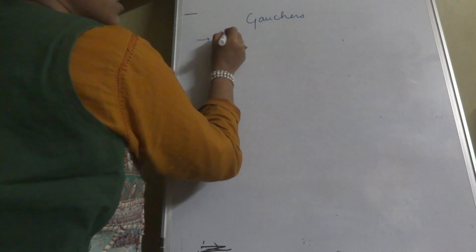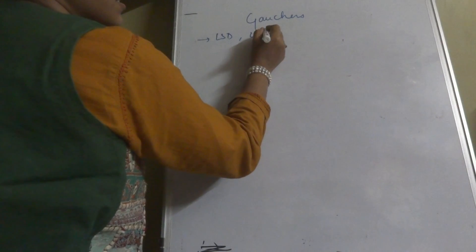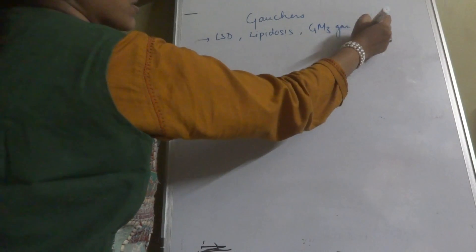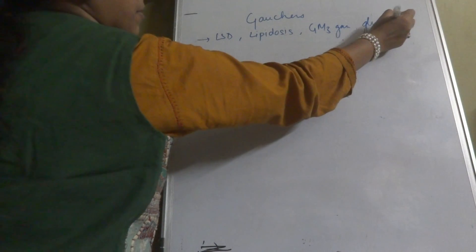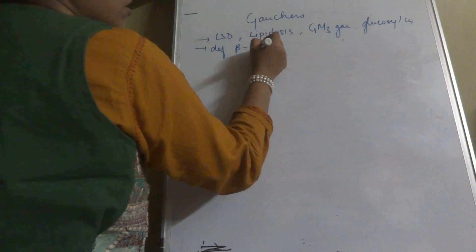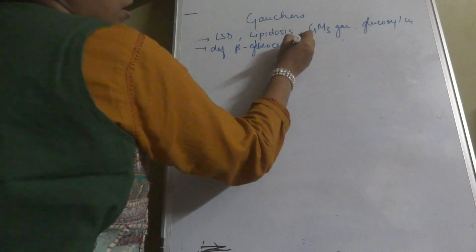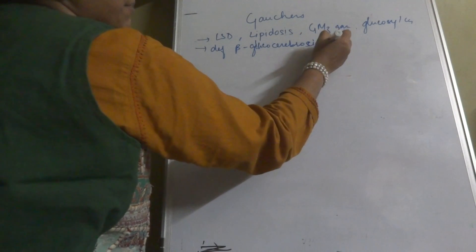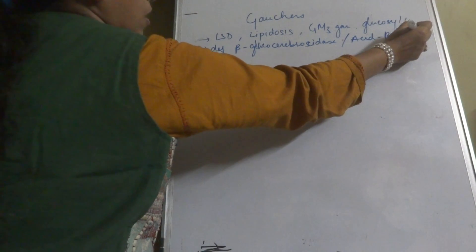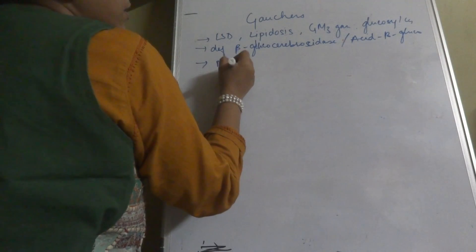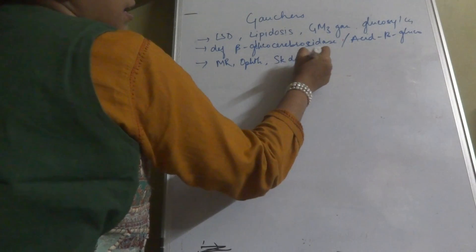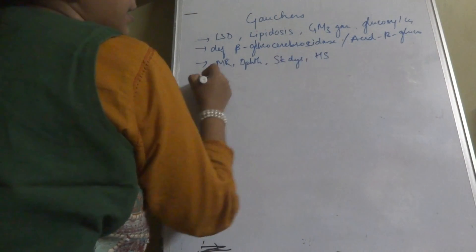To summarize: Gaucher's disease is a lysosomal storage disorder and lipidosis with accumulation of GM3 ganglioside or glucosylceramide, deficiency of beta-glucocerebrosidase or acid beta-glucosidase, and features including mental retardation, ophthalmic involvement, skeletal dysplasia, and hepatosplenomegaly across Types 1, 2, and 3.